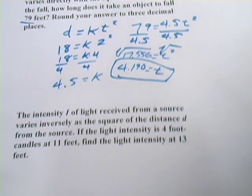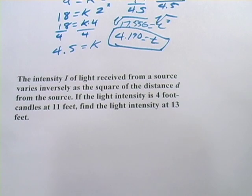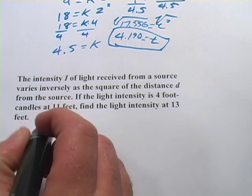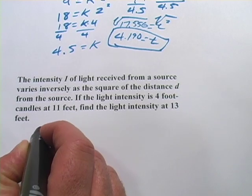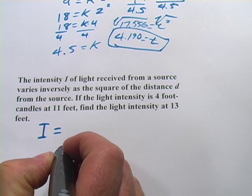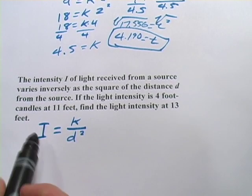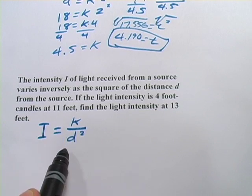All right, let's look at one with inverse variation. This one says the intensity I of light received from a source varies inversely as the square of the distance d from the source. So basically what that means is the farther away a light is, the dimmer it is, the less intense it is. And that makes sense. This is inverse variation squared, and they're saying the intensity varies inversely as the square of the distance. So we're going to use I equals K over D squared.